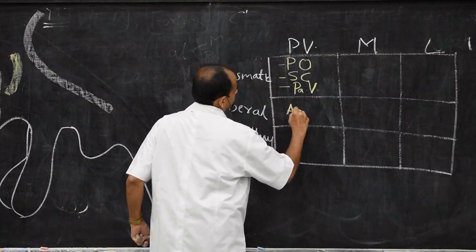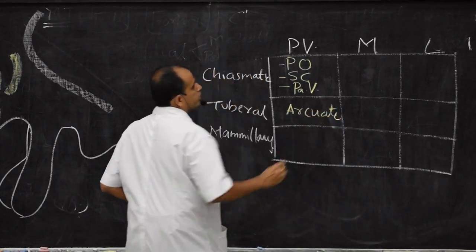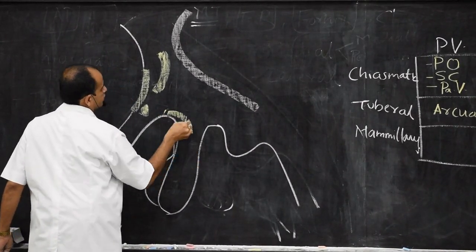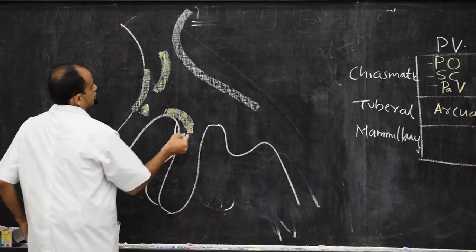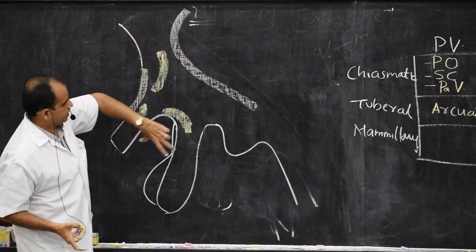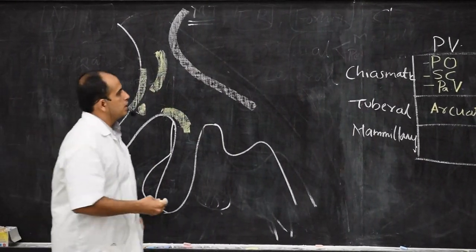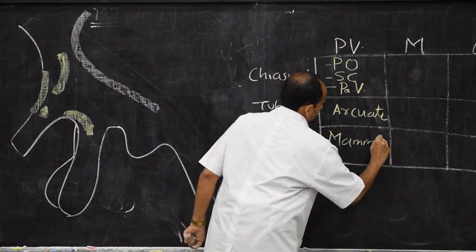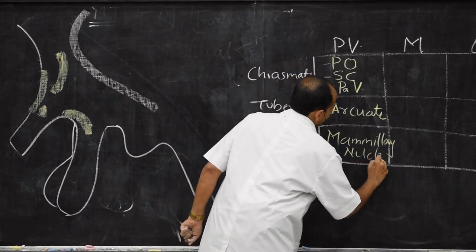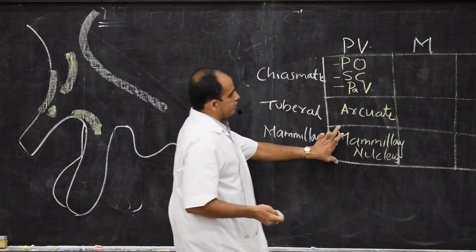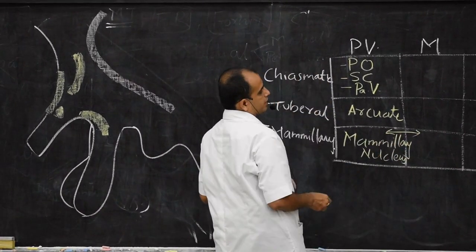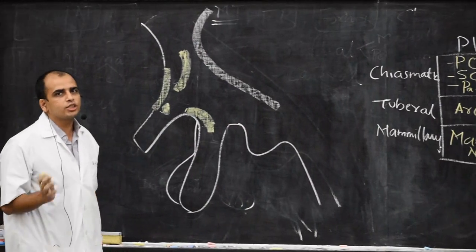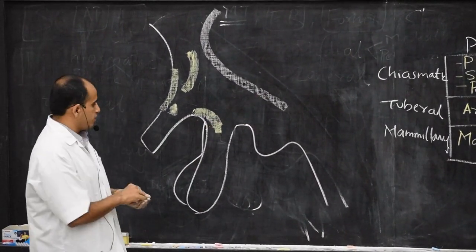In the mammillary region, the periventricular zone contains the mammillary nucleus, which can be identified as medial and lateral — the medial part extending over both the medial zone and the periventricular zone. In the lateral zone of the mammillary region there is also the tubero-mammillary nucleus. So that covers the periventricular zone nuclei.